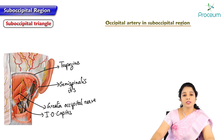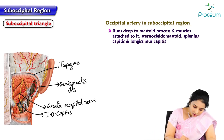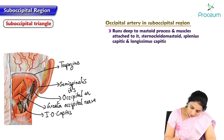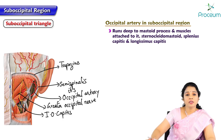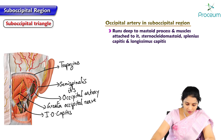Regarding the occipital artery in the suboccipital region, the occipital artery runs deep to the mastoid process and the muscles attached to it. This is the occipital artery, which lies deep to the muscles attached to the mastoid process. The occipital artery is a branch of the external carotid artery. It lies deep to sternocleidomastoid, splenius capitis, and longissimus capitis muscles.